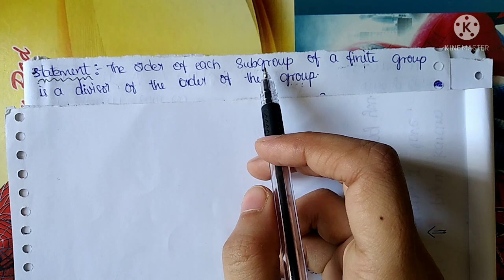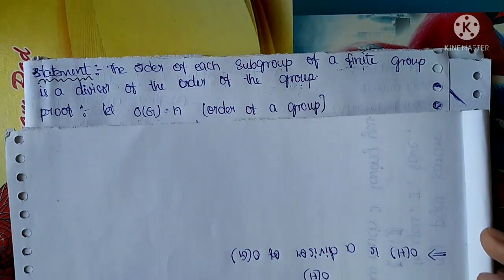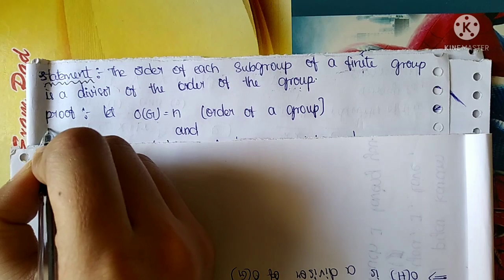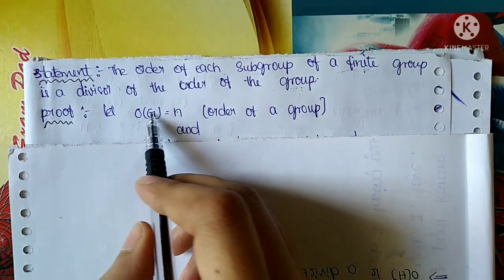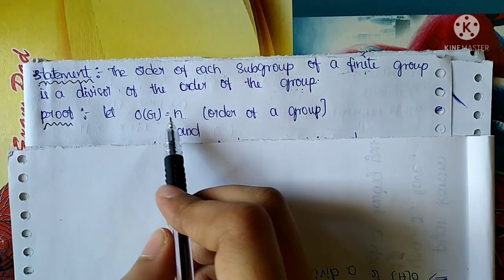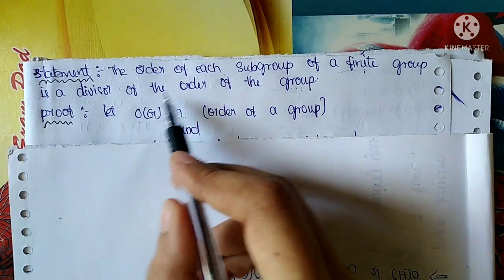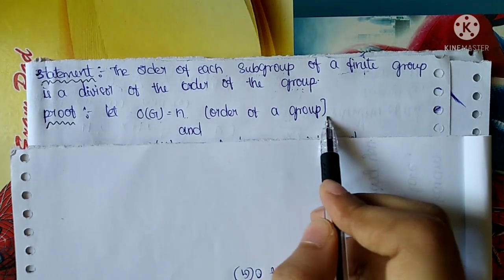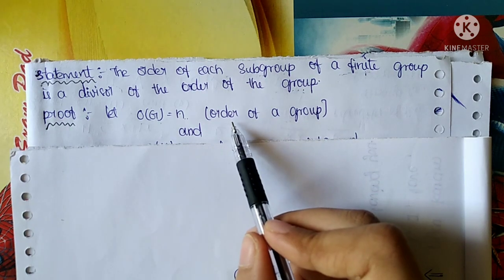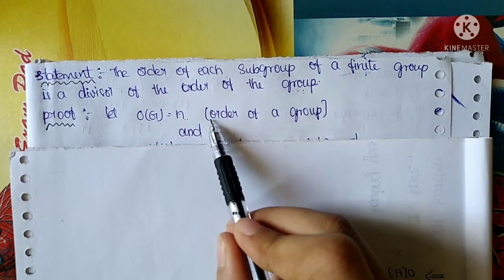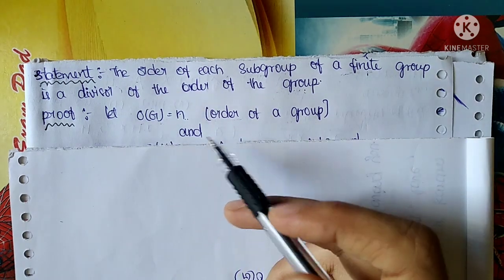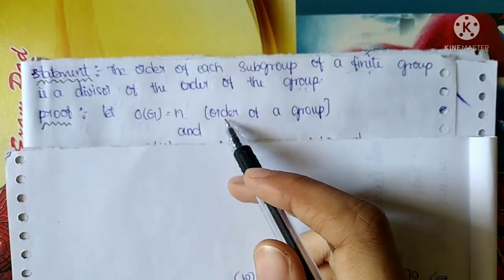We are going to explain this step by step and show the values. First I will show the proof. Let order of G be equal to n. So we will show the order of G, and here we will show the group. We will show the order of G — we have the order of G defined as n.